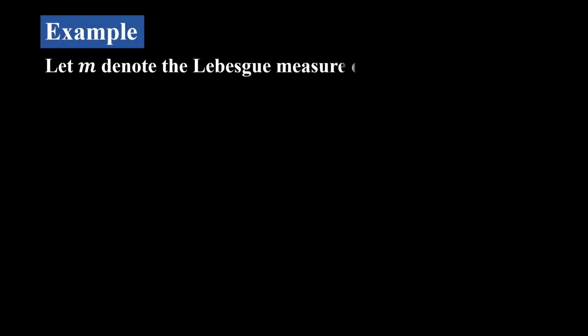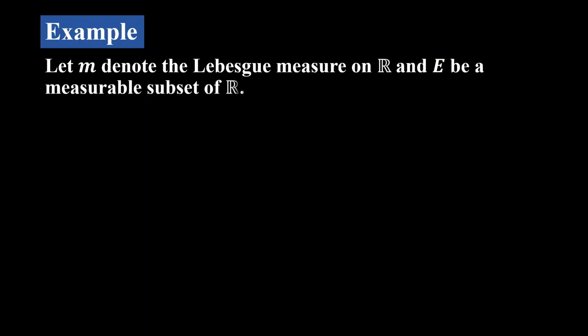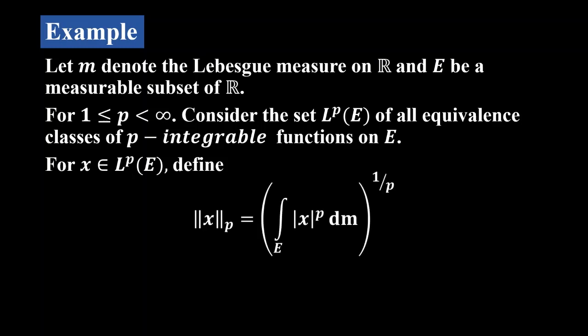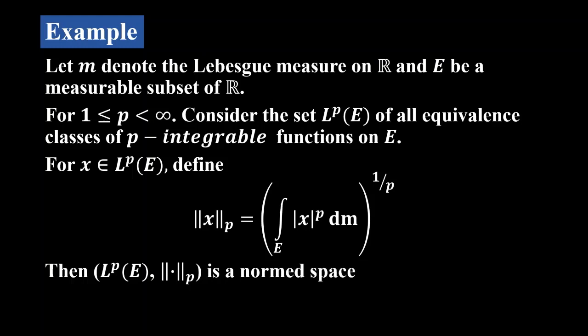Consider this example. Let M denote the Lebesgue measure on R and E be a measurable subset of R. For 1 ≤ p < ∞, consider the set Lp(E) of all equivalent classes of p-integrable functions on E. For x ∈ Lp(E), we define ‖x‖_p as the integral over E of |x|^p dM, whole raised to 1/p. Then we can easily verify that this space, together with this norm, forms a normed space.